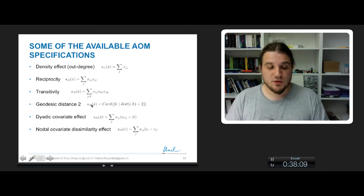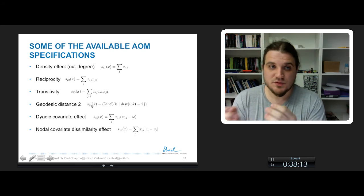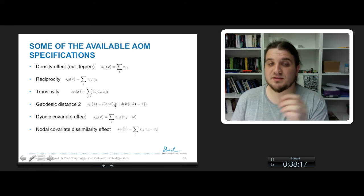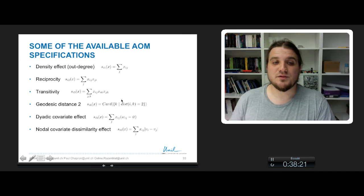You can include, for example, the effect of the geodesic distance, so this effect could be the number of nodes that are situated at geodesic distance 2 from the node i.